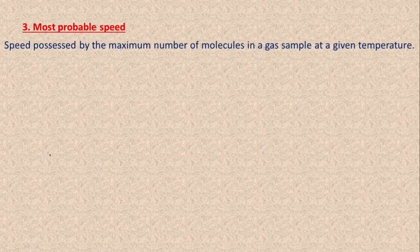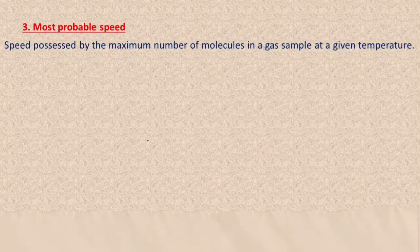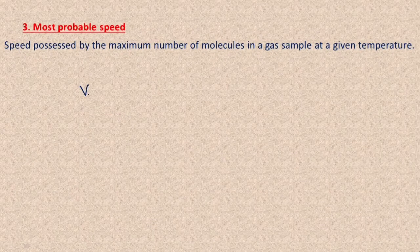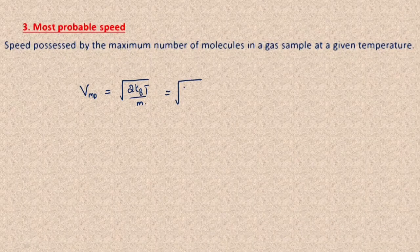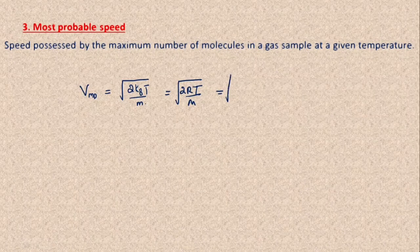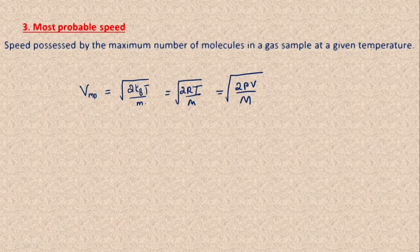Now let us discuss most probable speed. The most probable speed is the speed possessed by the maximum number of molecules in a gas sample at a given temperature. Using Maxwell's speed distribution law, the equation for most probable speed V_mp equals the square root of 2K_BT divided by m. Substituting K_B equals R over N_A, this becomes the square root of 2RT divided by capital M, or equivalently the square root of 2PV divided by capital M.